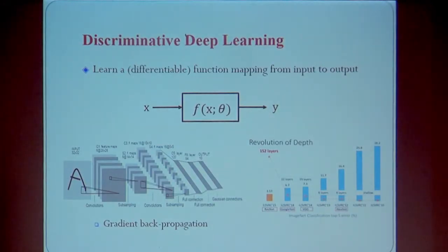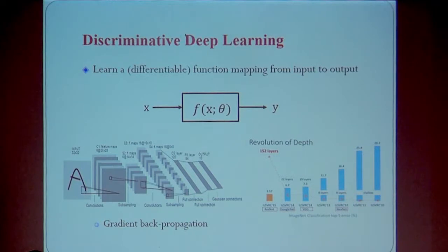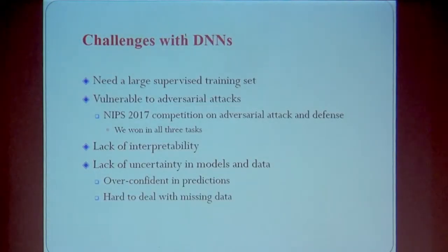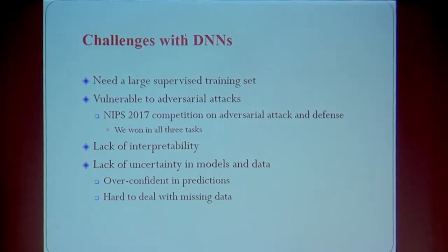This is the most common form of deep learning we see in many applications. We call it discriminative deep learning. We learn a particular function mapping from the input to output. The most famous example may be the convolution network being widely used, especially in computer vision. This function is differentiable, so you can learn with gradient descent.